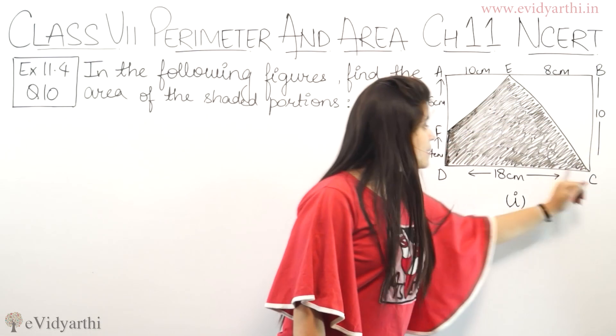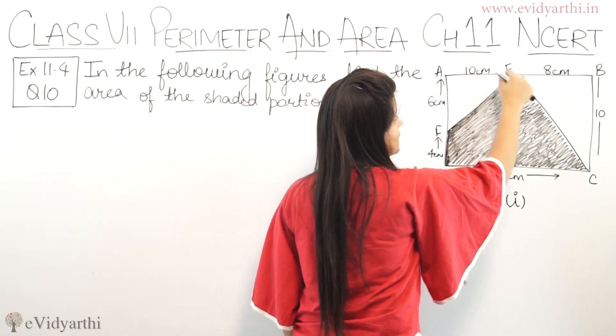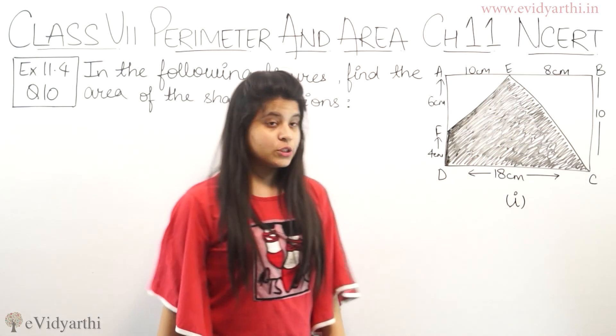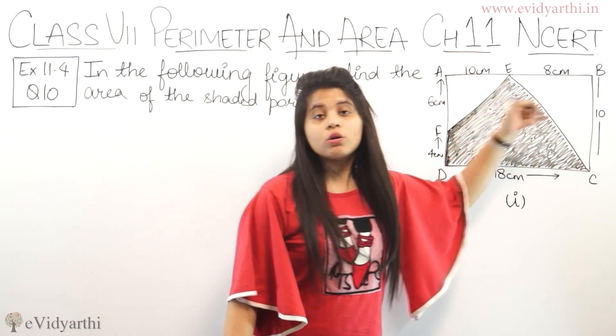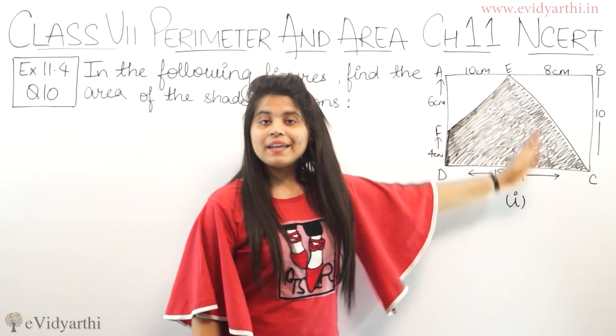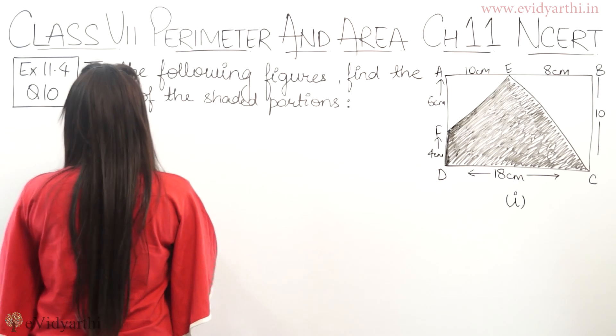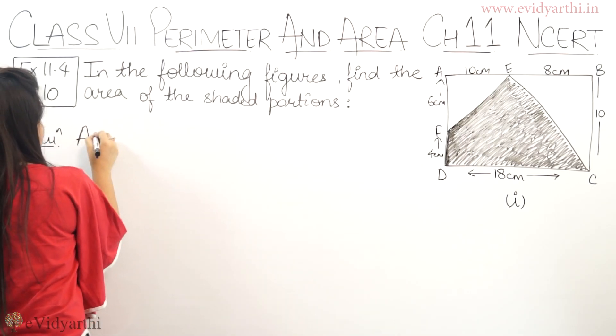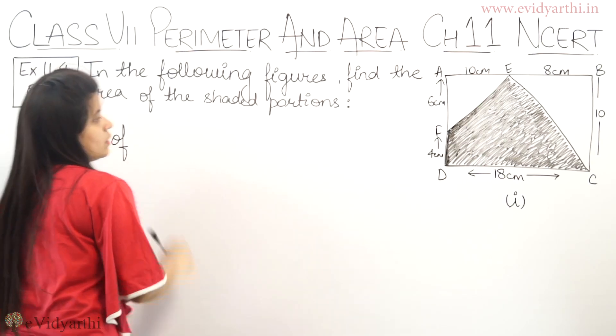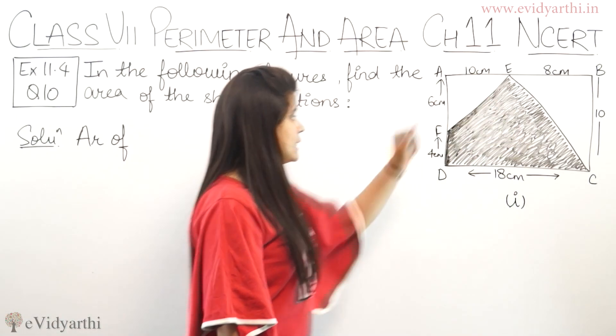You can see here we have a rectangle given and under these two parts, if I minus it, then we will get the shaded area. So now, first let's write it down. Area of FDCE.